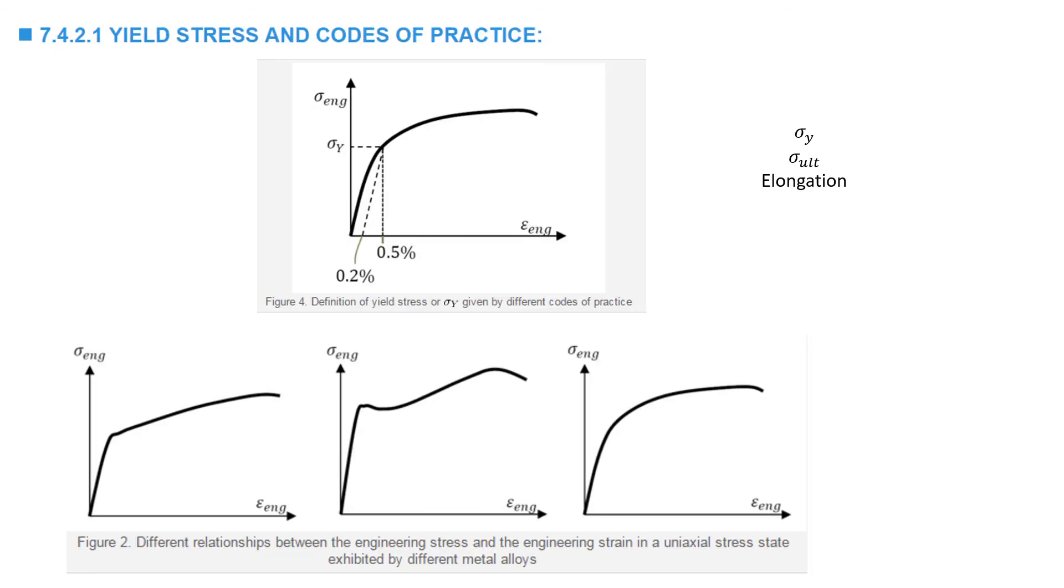Codes of practice define three values based on the stress strain curve of the material: the yield stress, the ultimate stress, and the elongation. The ultimate stress is the maximum stress achieved in the test, and the elongation is the maximum strain achieved in the test.